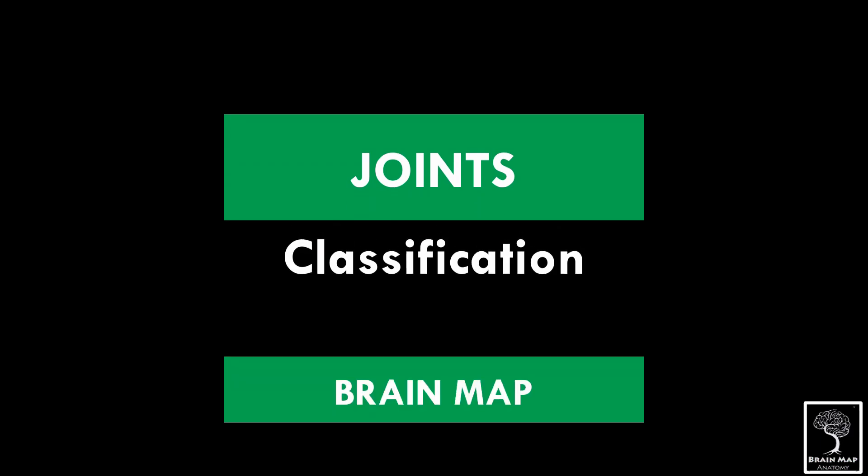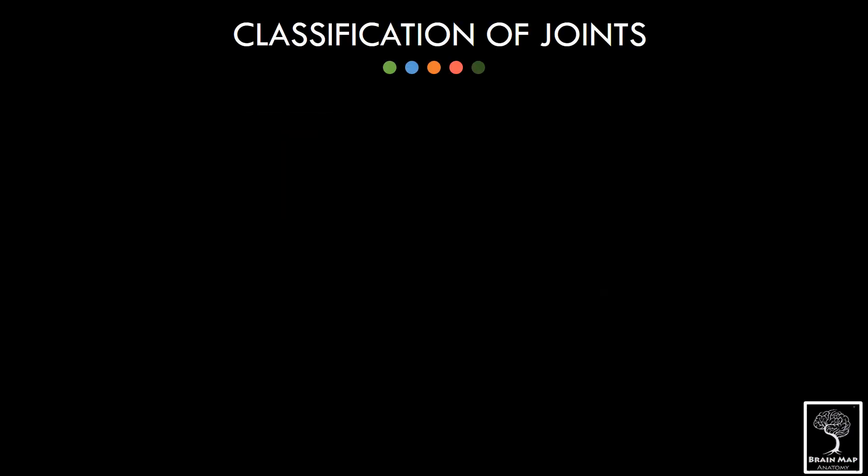Hello and welcome to BrainMapAnatomy. Today we will see the classification of joints. Joints are defined as the junction between two or more bones.